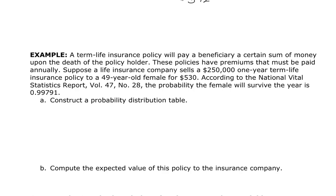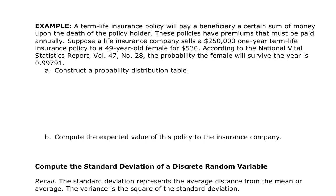Another place that uses expected values is insurance policies. Insurance policies are betting on you living, because if they bet on you dying, they're not going to make any money. A term life insurance policy pays a beneficiary a certain amount of money if the policyholder dies, with premiums paid typically annually. Suppose the life insurance company sells a $250,000 one-year life insurance policy to a 49-year-old person for $530. According to the National Vital Statistics Report, the probability of a female surviving that year at that age is 0.99791 — a 99.79% chance of survival.